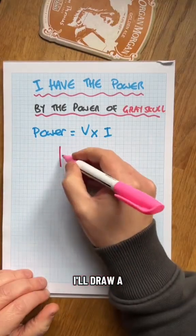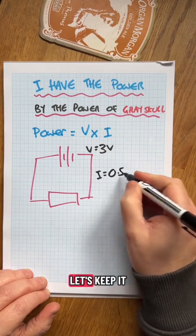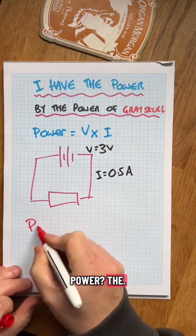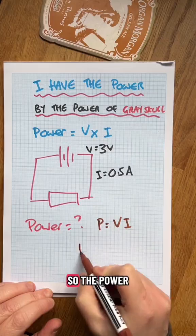Let's say we know the voltage in this circuit is 3 volts. The current in amps is 0.5. Let's be good and easy. What is the power in that circuit? I don't know, but I've got a formula. Power is V times I.